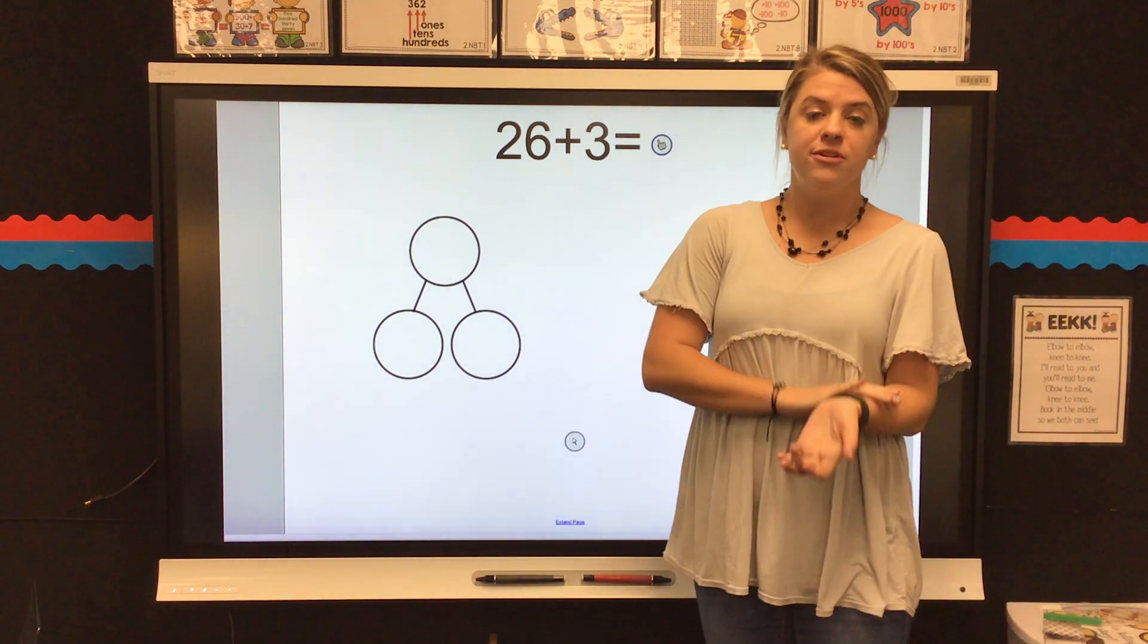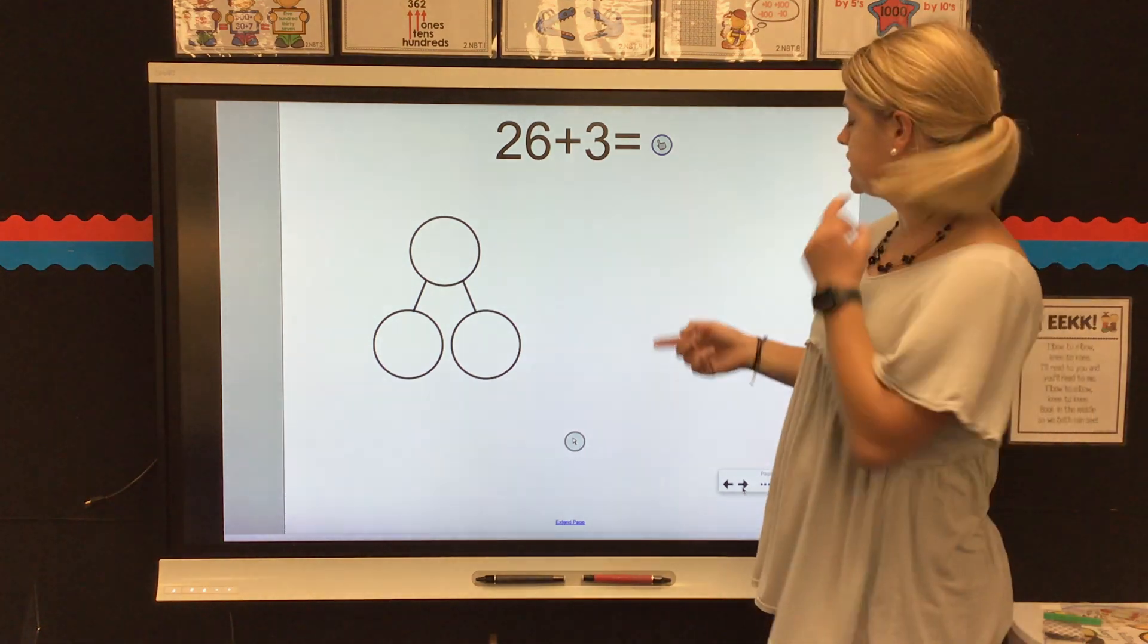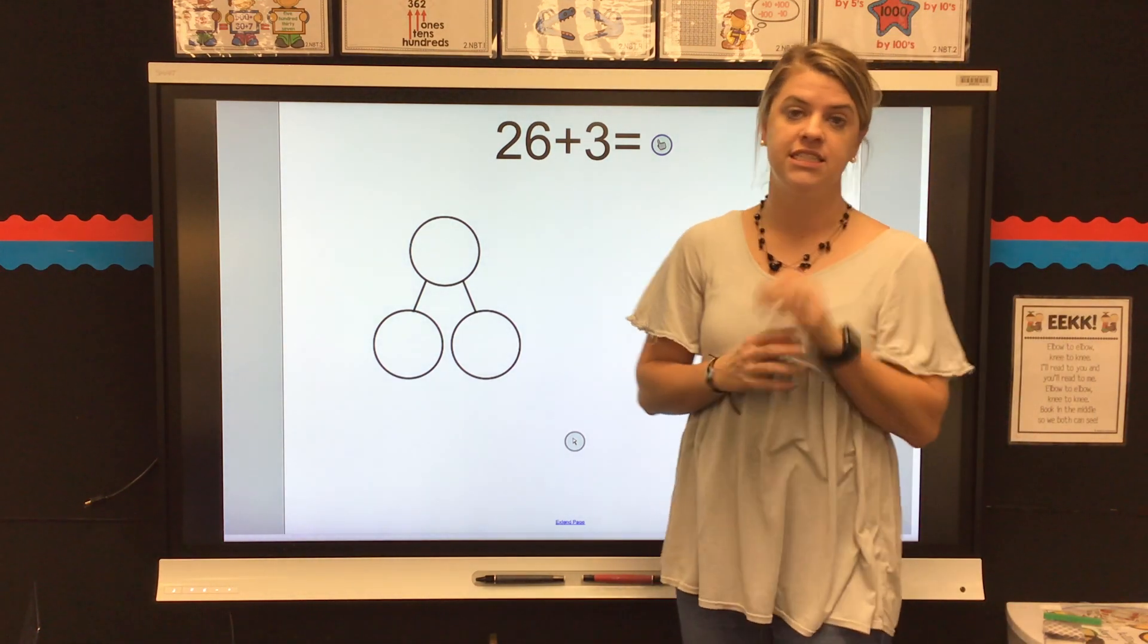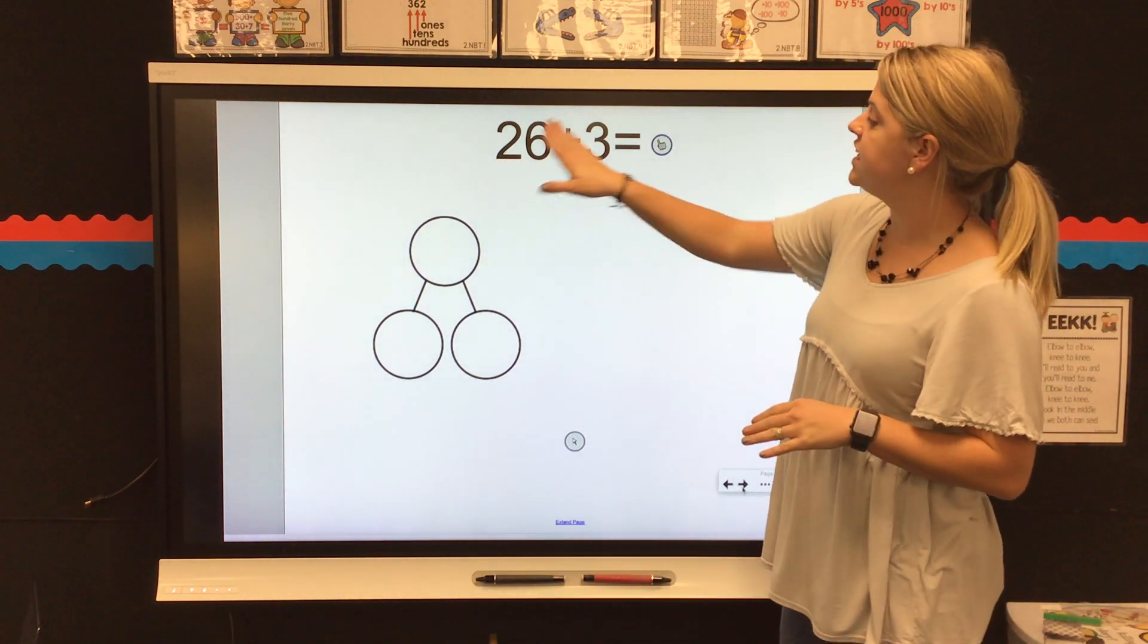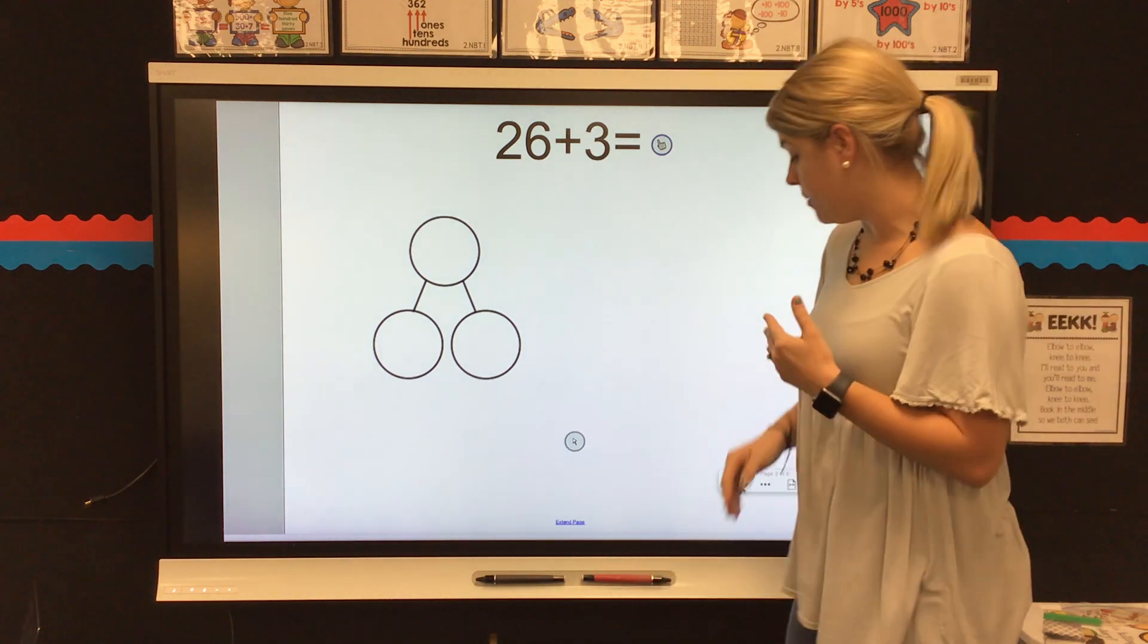So, we are going to use this number bond to help us solve the problem 26 plus 3. Now, when I'm using a number bond, I want to use the biggest number first, especially in today's lessons. So, I have 26 plus 3 and I know that 26 is my bigger number.